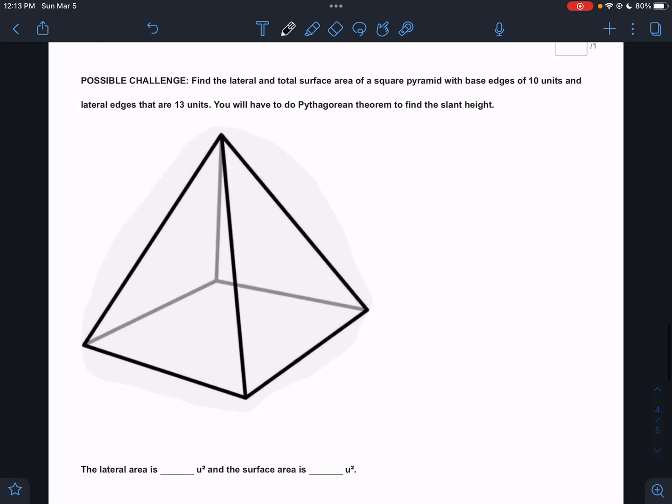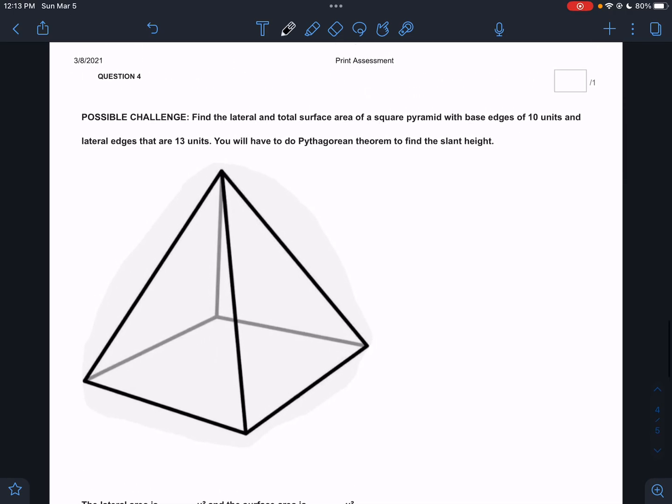Okay. Pyramids are going to be the toughest for most people. It says find the lateral and total. I'm going to write those formulas right. The start, the lateral, and the total. The lateral is the same first piece, right? It's that pH. They tell us that the base edges are 10. They tell us it's a square pyramid.